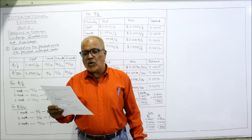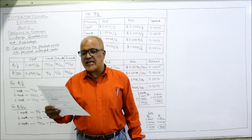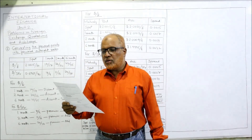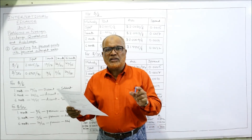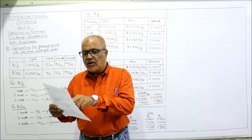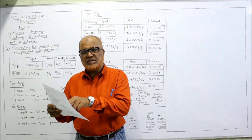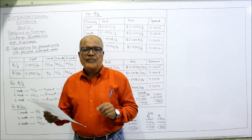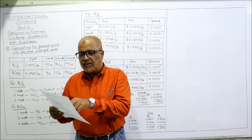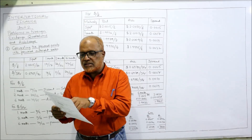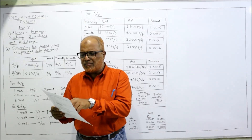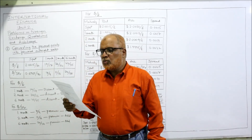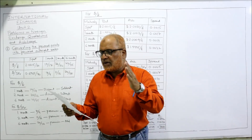We are given two quotations: one for dollar per pound and the second for dollar per SFR — SFR stands for Swiss franc, the currency of Switzerland. For dollar per pound, the spot bid rate is 2.0015 and the ask rate is 2.0030. Then the forward points are: one month 19/17, three months 26/22, and six months 42/35.